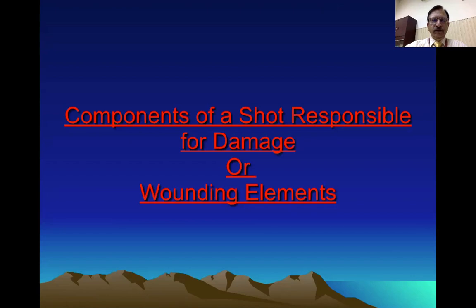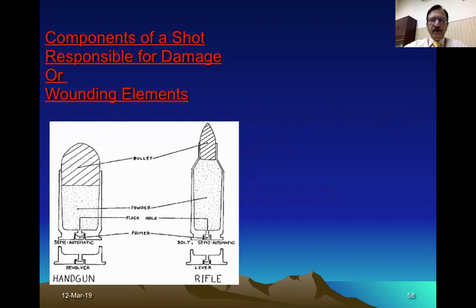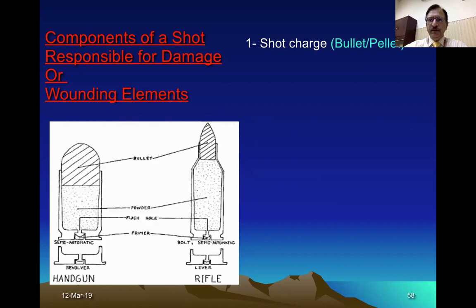The components of a firearm cartridge which are responsible for wounding — what are the wounding elements responsible for damage to the human body or any surface where it strikes? It is important to understand what components are responsible for wounding. The ammunition may be of any type — it may be a handgun or assault rifle — but the basic wounding components remain the same, whether it is a smoothbore or rifled weapon.